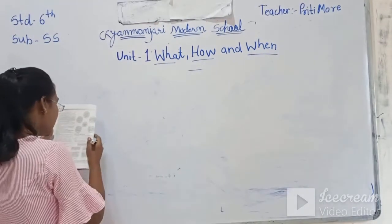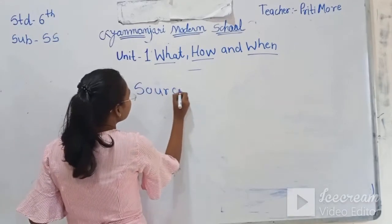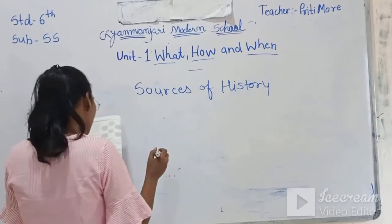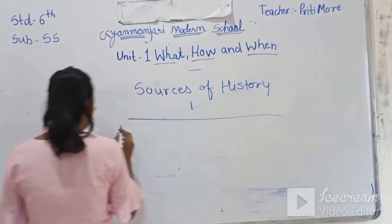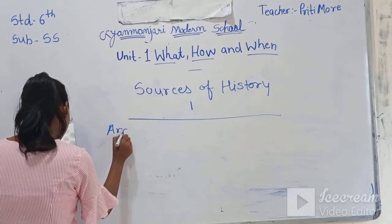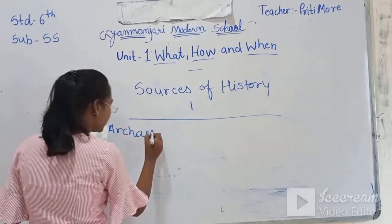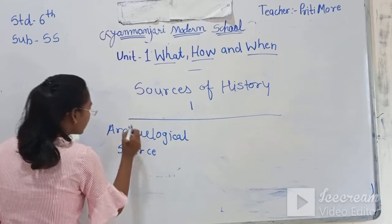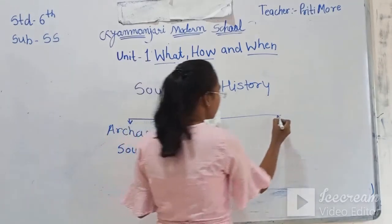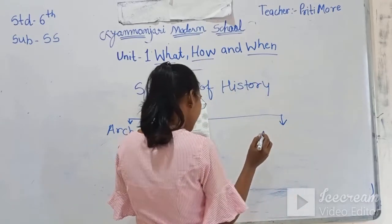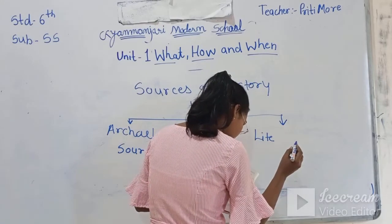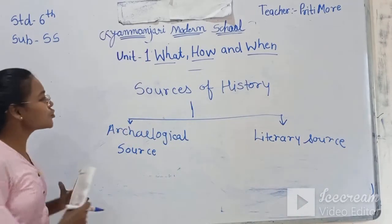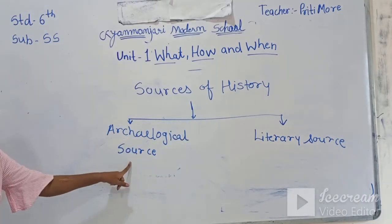There are two sources of history: archaeological sources and literary sources. These two sources are there for studying history.